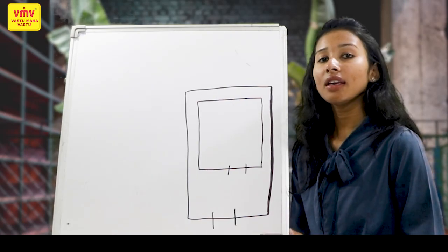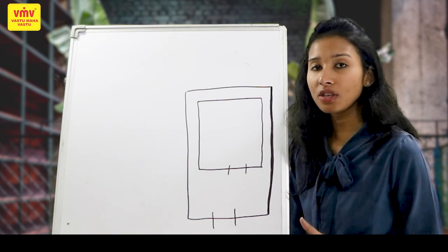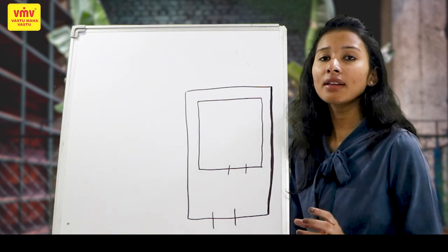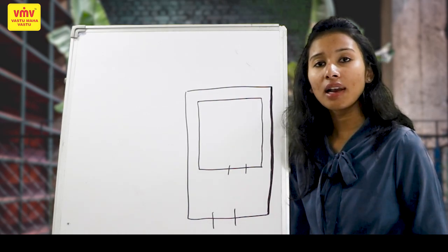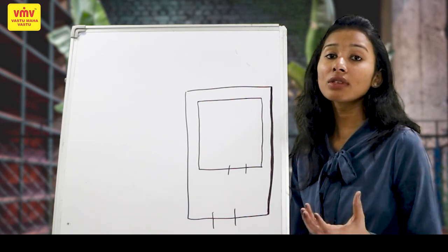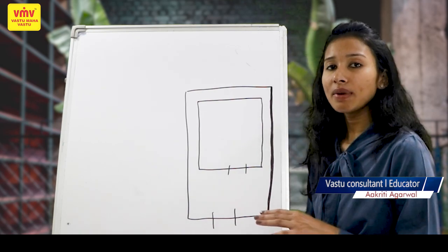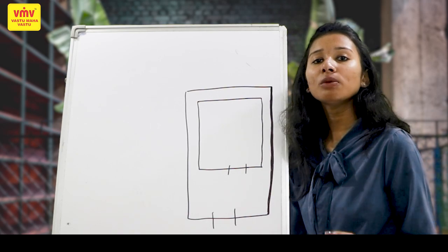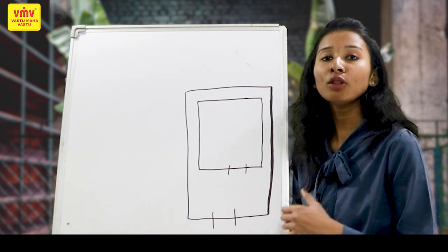In this video, we will talk about net usable space, which means a full plot that has less than the full construction area. In this case, we will consider which center to use. We will consider the directions according to the full plot and then consider the full plot center. We will clear the confusion about whether we should consider the full plot or net usable space, and then consider some situations in which we consider both.